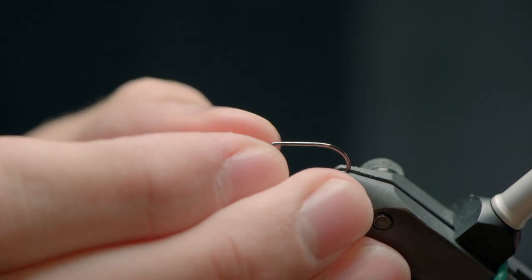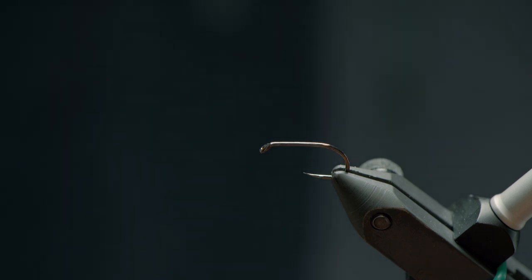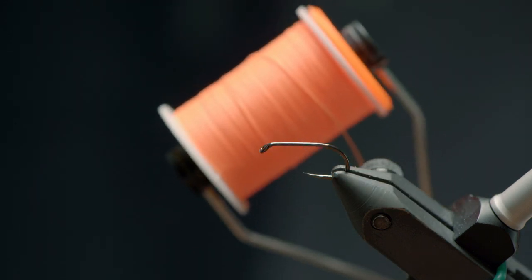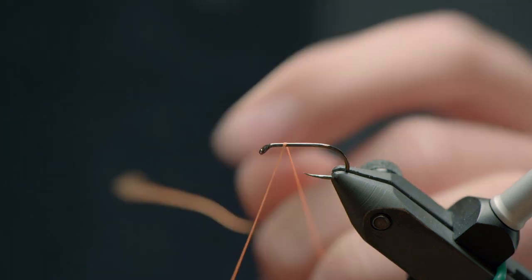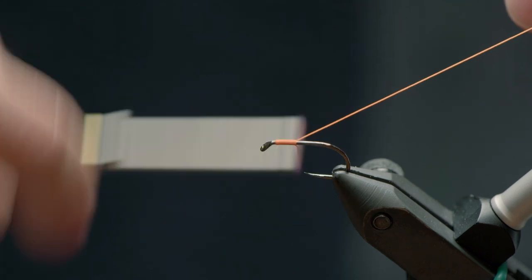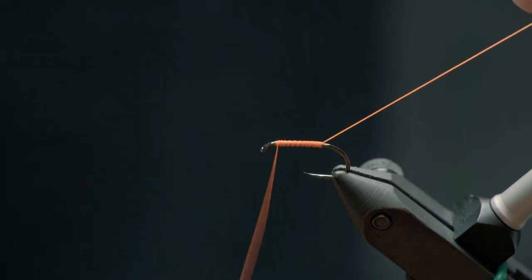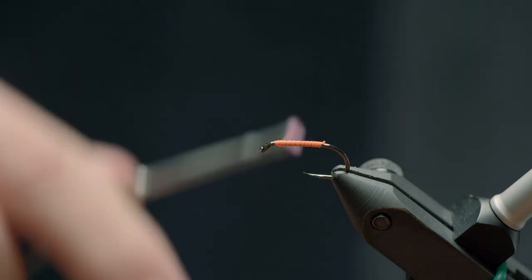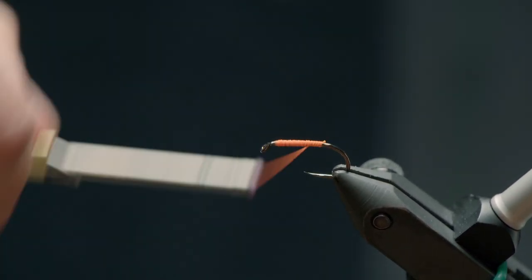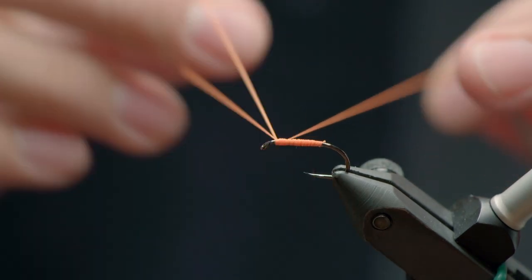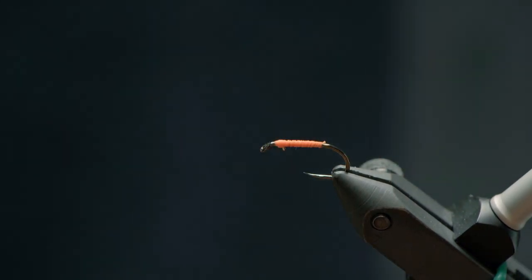The next one is what I would call the cheating way to do this. But it's also, I found, probably the best way to do it if you don't want a weighted version. So let's change up colors just to keep things interesting here. This is the same stuff. This is glow bright. This is shade number seven. So it's like a bright but light orange. Doesn't really matter. We'll do the same thing. Start this in front. Wrap down over the body. Come back up with that. Clip off the excess. Like so. And then what I'll do is I'll just build up a little bit of a thread base here. Like so. And then I'll whip finish. And cut our thread. This is why I call it the cheating way.